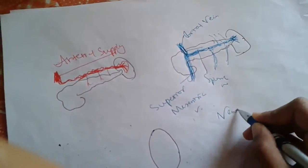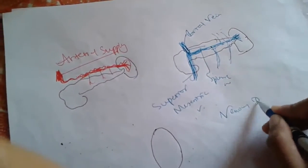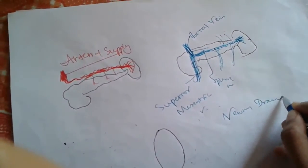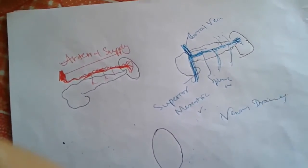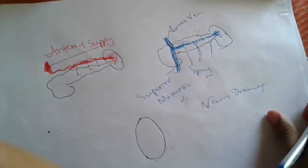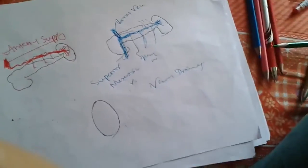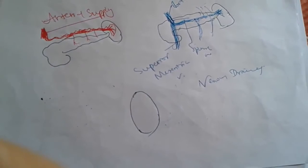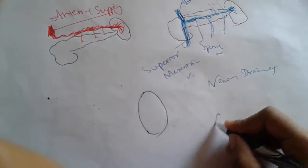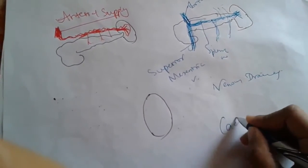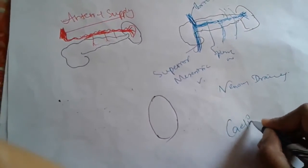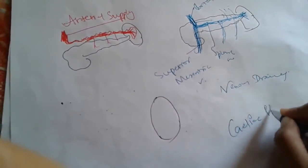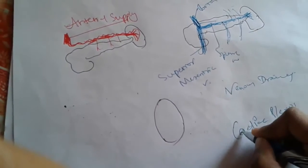This completes the venous drainage of the spleen. The nerve supply of the spleen is derived from the sympathetic fibers of the celiac plexus.